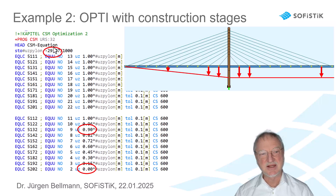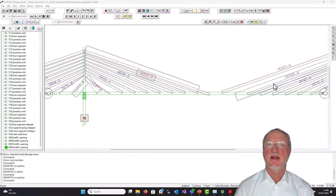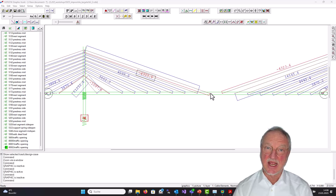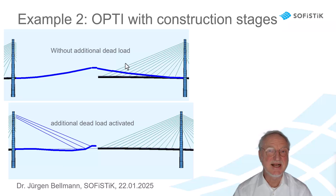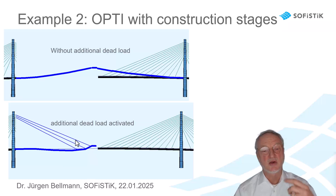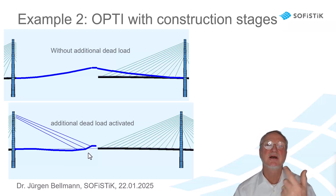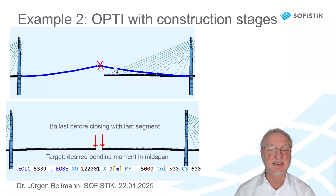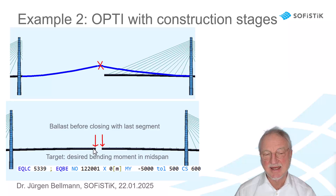I change my targets to the deformation at the pylon and say in mid-span this is my new target: 29 mm. At the sidespan I make it with a linear approach. Now to the problem with the compression in the longest cable — this mainly comes from the additional dead load. Because when we first erect our bridge without additional dead load, we come a little bit too high. When we then insert the last segment and activate the dead load, we get a kink in our system, and therefore this cable causes compression because the program wants to push down this point. There are different possibilities to handle this problem — here I use ballast.